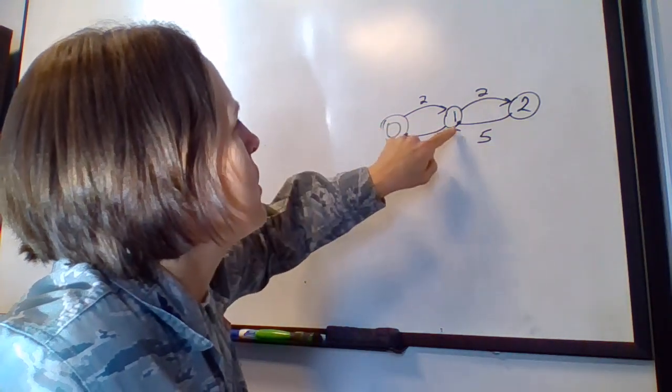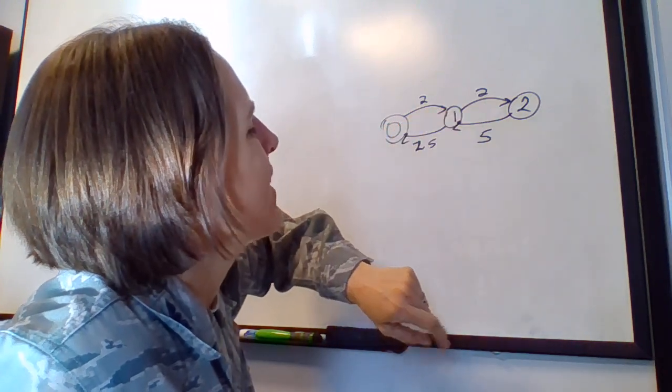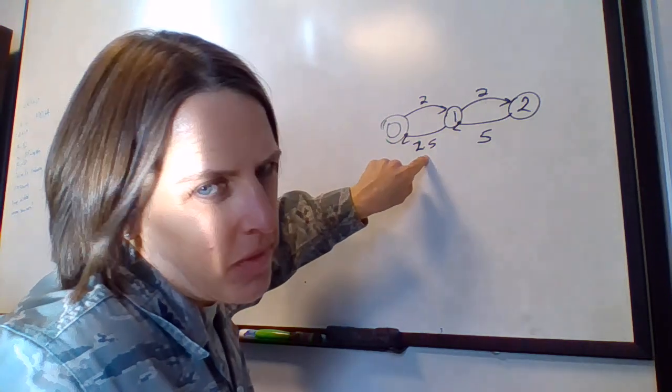So we're going to go from state 0 to state 1 with an arrival rate of 2, same thing from state 1 to state 2. And let's say that they can be changed at a rate of 2.5 per day.